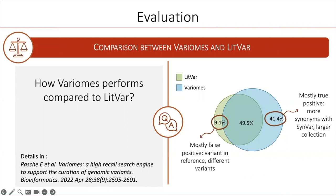The next evaluation is a comparison of Variome with another similar tool, LitVar. At the time of the evaluation, LitVar 2 was not yet released, so the comparison is based on the first version of LitVar. We used a dataset of 800 variants in BRCA1 and BRCA2. The results show that about half of the documents are in common between both systems. It also showed that Variome is missing 9% of documents retrieved by LitVar — manual analysis showed these are mostly false positive documents, specifically documents about a different variant occurring at the same position, caused by variant aggregation performed by LitVar. In contrast, Variome is able to retrieve 41% of documents not retrieved by LitVar, and manual analysis showed these are mostly true positive documents.